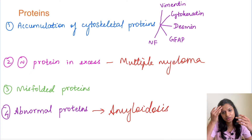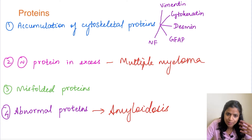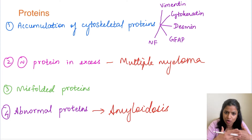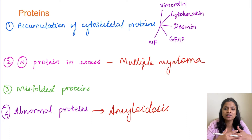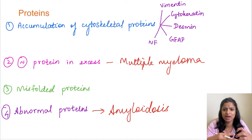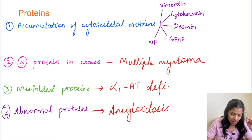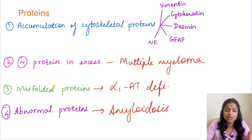Amyloid is a fibrillary protein which is misfolded or abnormal, and it causes dysfunction of the organ in which it gets deposited. Other examples include misfolded proteins — when normal protein folding by chaperones doesn't happen properly, it results in misfolded proteins that cause endoplasmic reticulum stress. Accumulation of these misfolded proteins can cause cell injury. An example of misfolded proteins is alpha-1 antitrypsin deficiency.